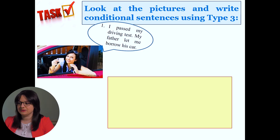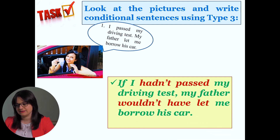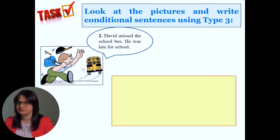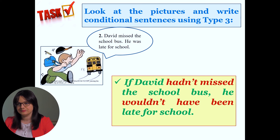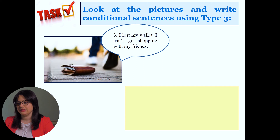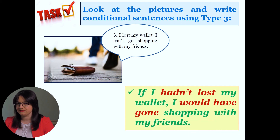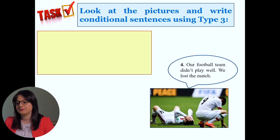The next exercise: look at the pictures and write conditional sentences using type 3. Let's check. Number 1: 'If I hadn't passed my driving test, my father wouldn't have let me borrow the car.' Number 2: 'If David hadn't missed the school bus, he wouldn't have been late for school.' Number 3: 'If I hadn't lost my wallet, I wouldn't have gone shopping with my friends.' Number 4: 'If our football team had played well, we wouldn't have lost the match.'